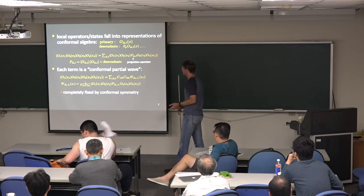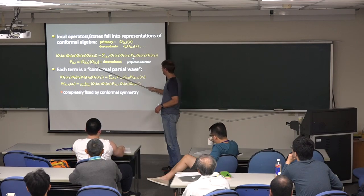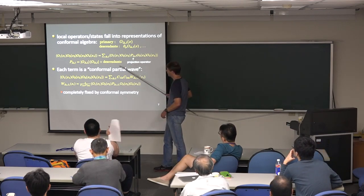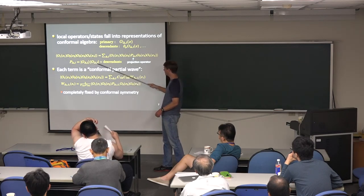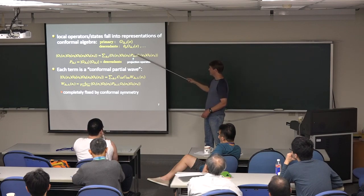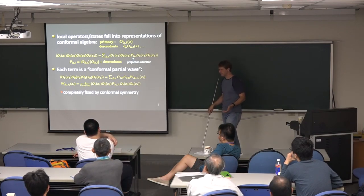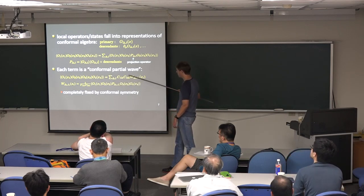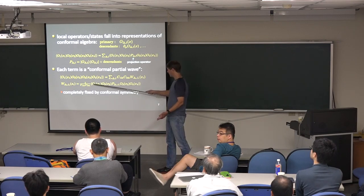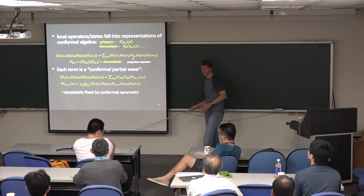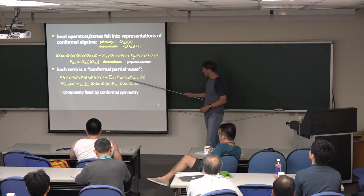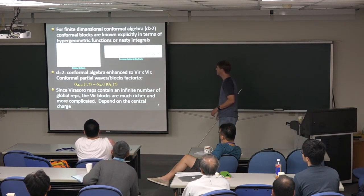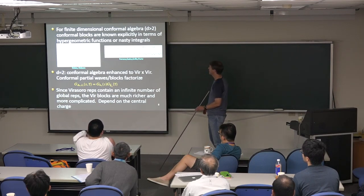In a little more detail: a primary operator's descendants are basically successive derivatives of the primary. We take the four-point function and insert the identity expressed as a sum of projection operators, where each projects onto one conformal family — the primary plus all its descendants. Each term corresponding to each projector is the conformal partial wave. We pull out the OPE coefficients, and the conformal partial wave W is completely fixed by conformal symmetry. These functions are the building blocks of correlation functions.